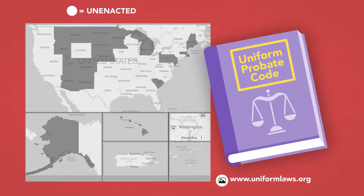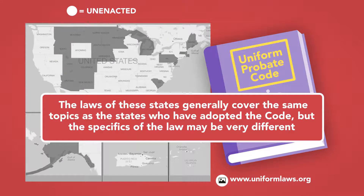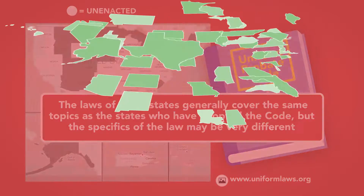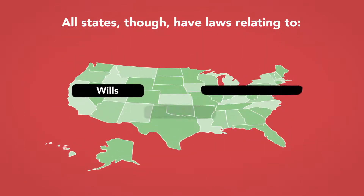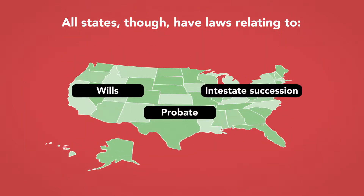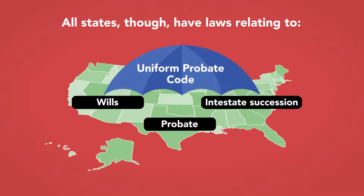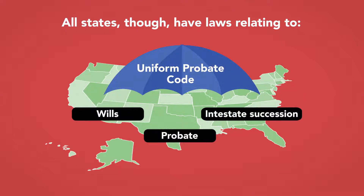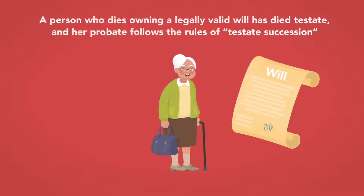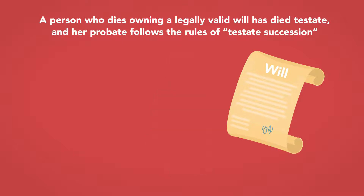In addition, many states have not adopted the Uniform Probate Code. The laws of these states generally cover the same topics, but the specifics of the law may be very different. All states, though, have laws relating to wills, testate succession, and probate. A person who dies owning a legally valid will has died testate, and her probate follows the rules of testate succession.